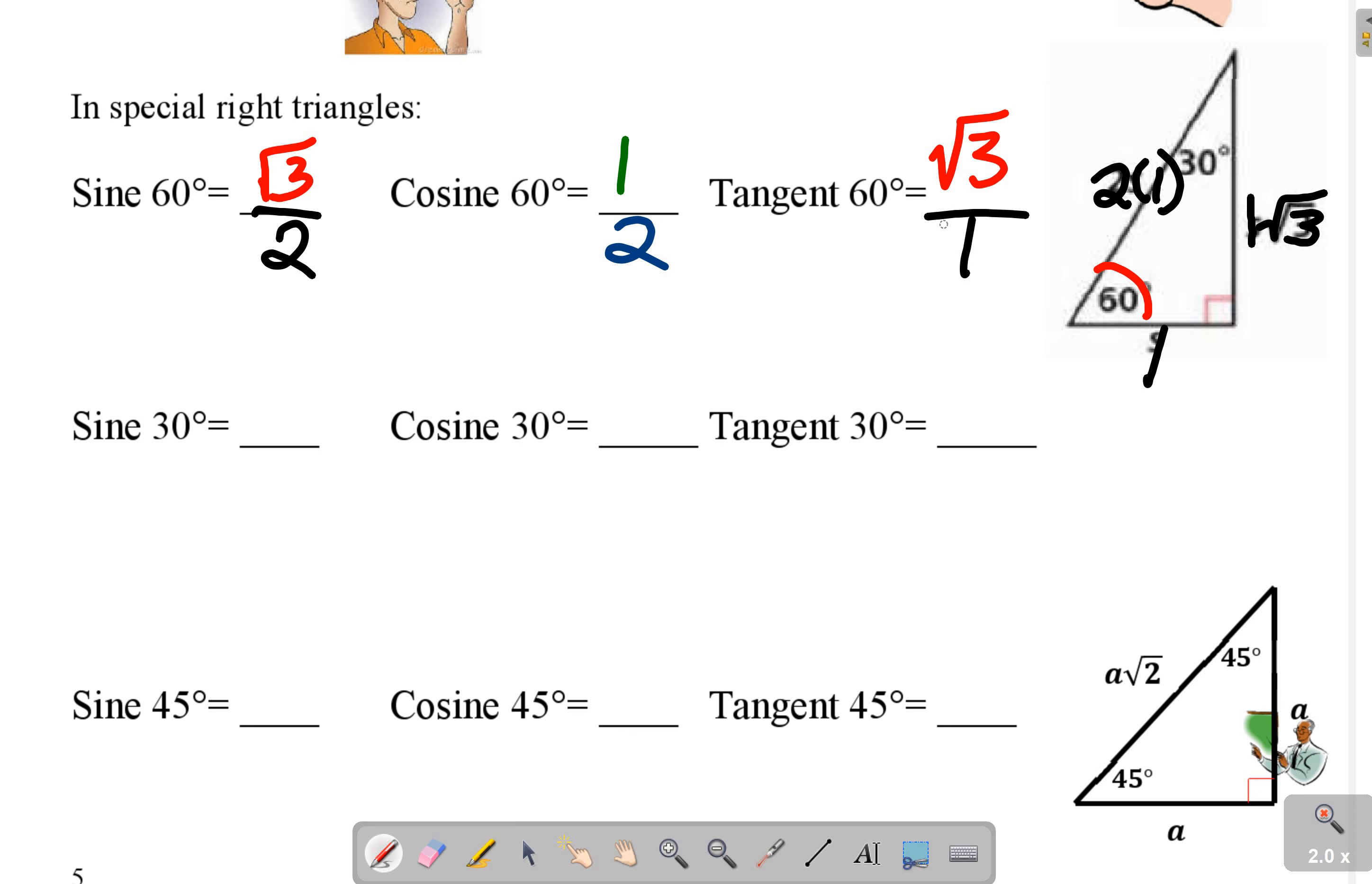So that's the sine of 60, cosine of 60, tangent of 60. The sine of 30, so 30 is over this way, that's going to be opposite, which is 1 over our hypotenuse, which is 2.